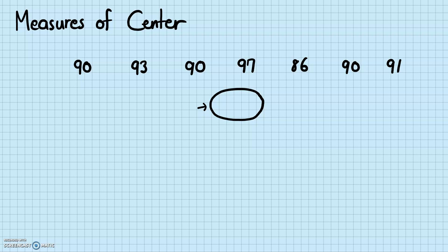The three kinds of measures of center that we'll be discussing are going to be the mean, the median, and the mode.